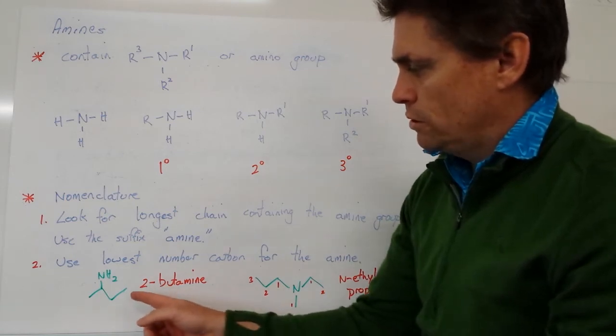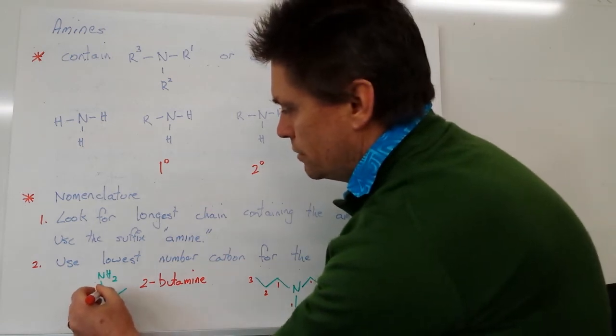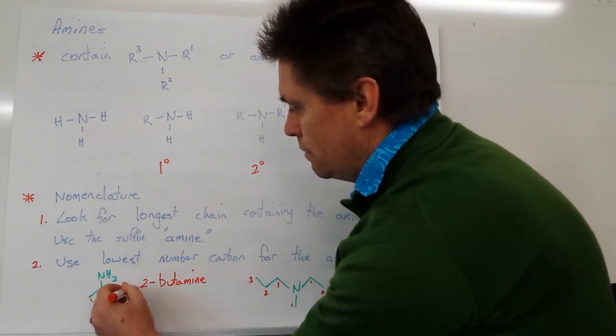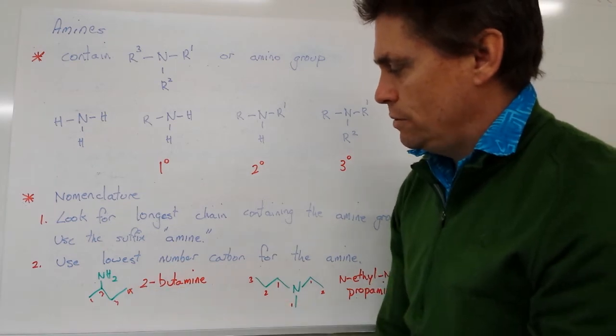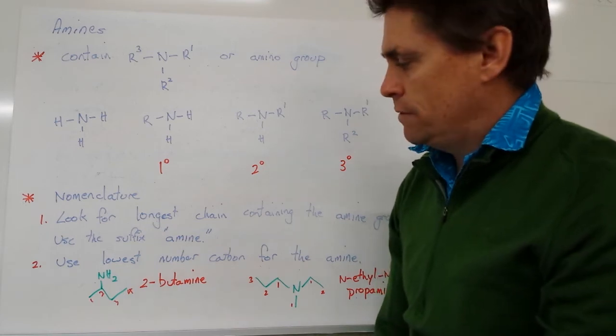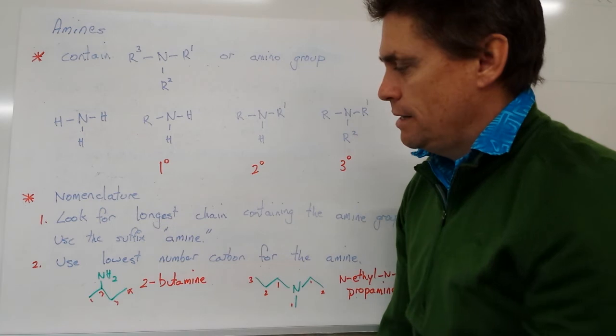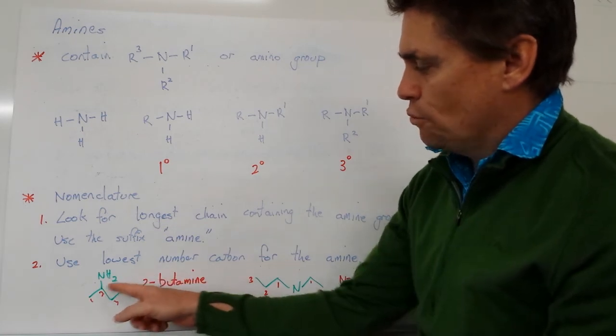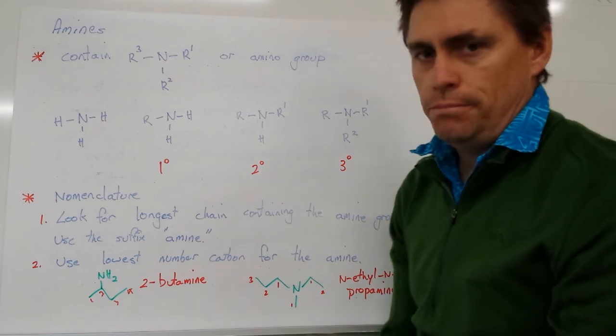So let's have a look at a simple molecule on the left hand side. We have a molecule with one, two, three, four carbons. So that's going to be a butane molecule. We drop the amine from the end of the butane and we add amine. So we've got butamine. And our amine group is coming off carbon number two. So we've got 2-butamine.